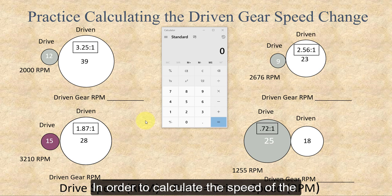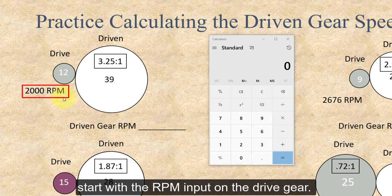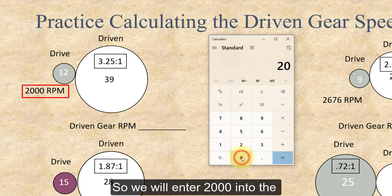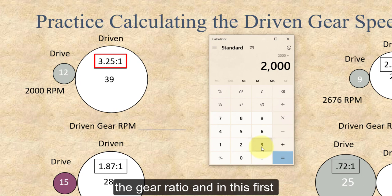In order to calculate the speed of the driven gear, we have to start with the RPM input on the drive gear. So we will enter 2000 into the calculator, and then we need to divide that by the gear ratio.